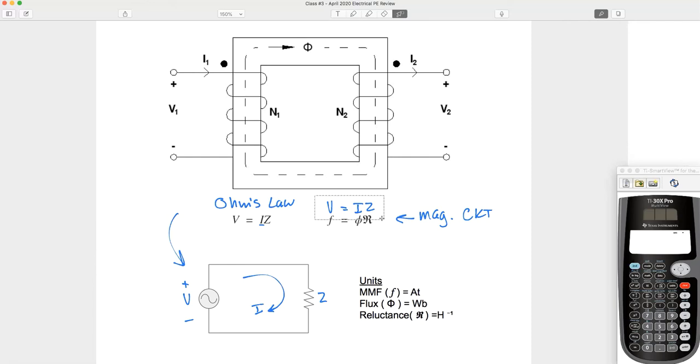So anytime we have to work a magnetic circuit problem, we can just set it up this way. Here's our magnetomotive force in the unit of ampere turns, just like voltage in a circuit. Here's our flux linking the primary and secondary winding. Notice how it loops just like our current, flux in Webers. And here's our reluctance. Reluctance acts just like impedance.